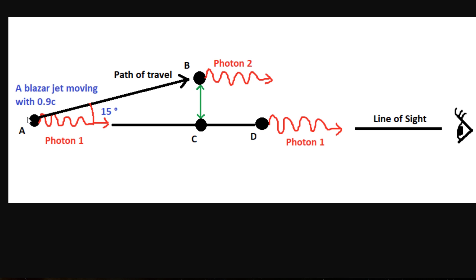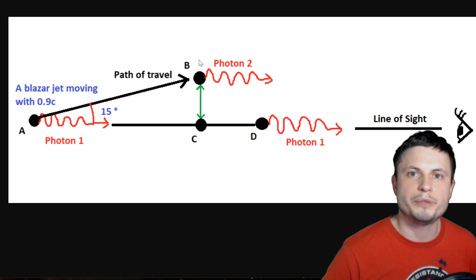And so when initial light is emitted, it starts traveling toward planet Earth and eventually we'll be able to see it. But by the time that the actual jet particles reach point B and emit the second photon, the first photon emitted from the black hole itself is only here.